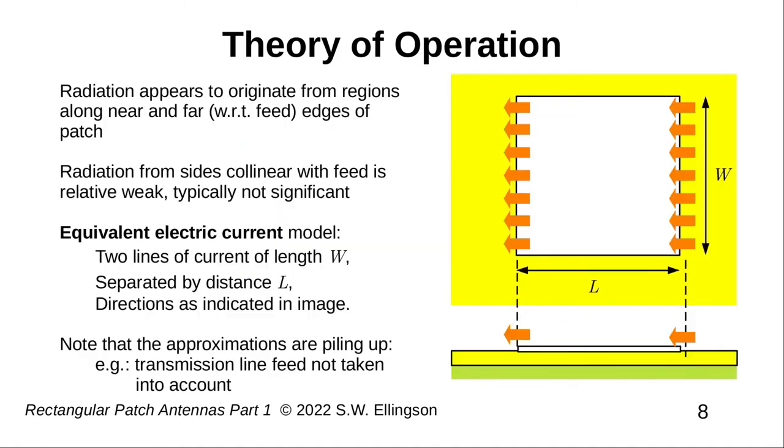All other components tend to cancel because they are not similarly aligned. Thus, radiation appears to originate from the near and far edges of the patch and not the sides or the top. At this point, it becomes awkward to think of radiation as being a continuation of the electric fields. So what we're going to do is switch to equivalent currents, which are shown here as orange arrows.